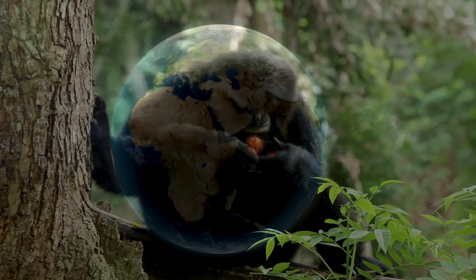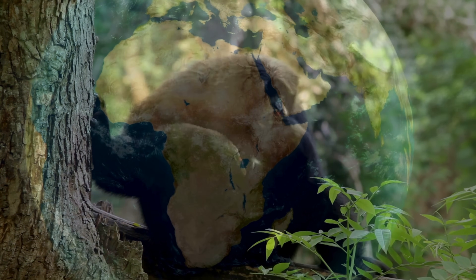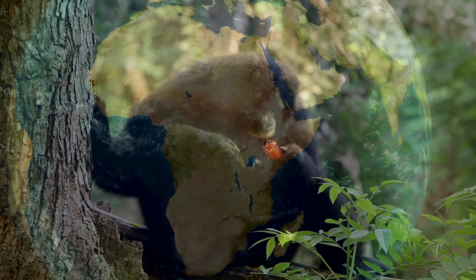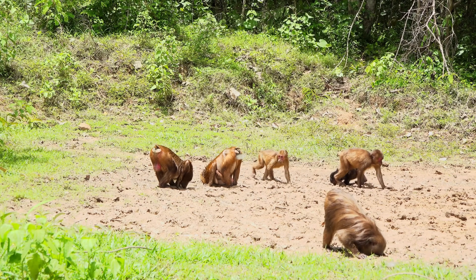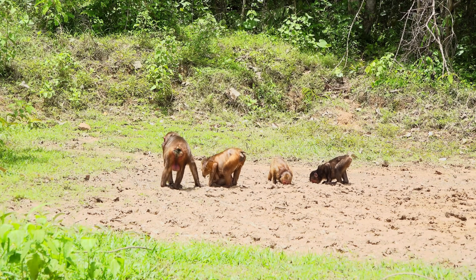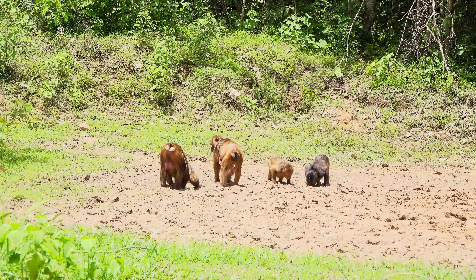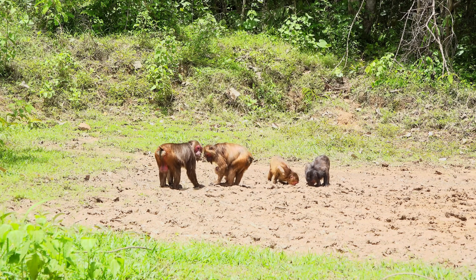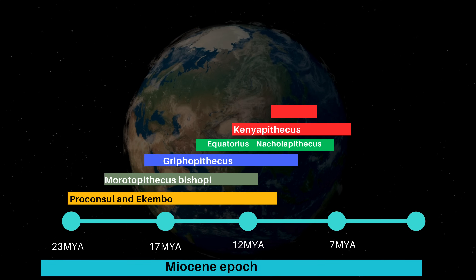Between 15 and 12 million years ago, apes that ate hard fruits and grass seeds thrived in eastern Africa. These apes were not directly related to modern apes and humans but were part of a different evolutionary branch. Kenyapithecus walked on four feet and spent some time on the ground, suggesting a transition from arboreal to terrestrial living had already begun before savannah spread across eastern Africa.